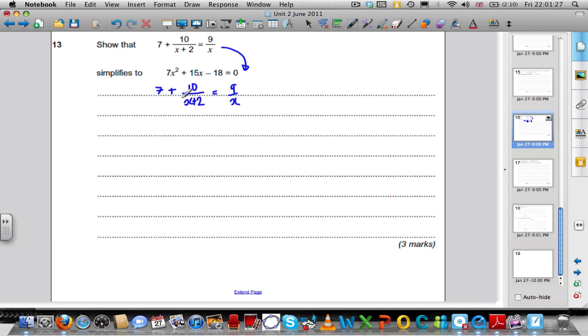A bit like SIRDS, I hate the X's on the bottom, on the denominators, so the very first thing I'm going to do is multiply both sides of the equation by X plus 2. When I do that, every term on both sides of the equation is multiplied by X plus 2.